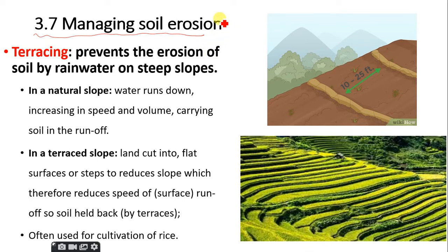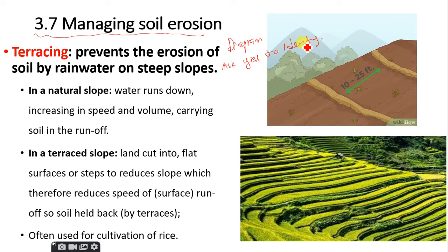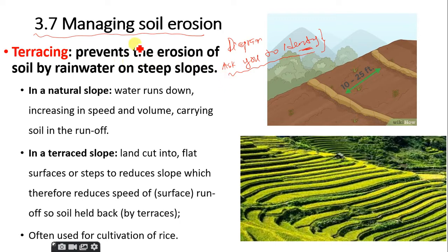In IGCSE exams, they will definitely give you a diagram if they want you to describe terracing or contour plowing. From the diagram, first they will ask you to identify, and once you're able to identify, you should be able to describe what is actually taking place. Where most students get issues is once you get the identification wrong, obviously the B and C part of that question — there's a high possibility you get them wrong. So today we'll see how students can differentiate between terracing and contour plowing, which are methods of controlling soil erosion.